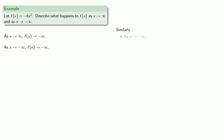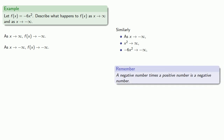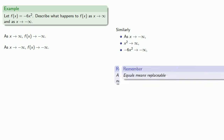Similarly, as x → −∞, x² goes to infinity — because while the square of a large number is a large number, the square of a negative number is a positive number. And again, −6x² will go to −∞, because that's a negative number times a positive number, giving a negative number. And since f(x) = −6x², equals means replaceable, so f(x) also goes to −∞.